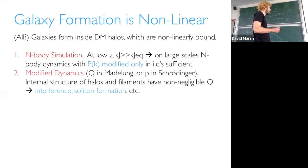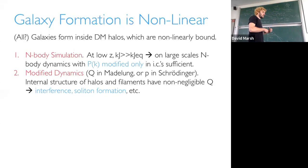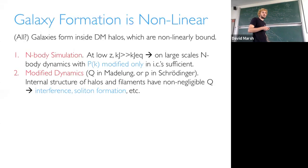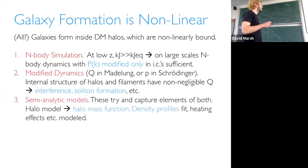You can modify the dynamics if you want more of the fuzzy dark matter physics — including either the quantum pressure in the Madelung formulation or the full wavefunction psi in the Schrödinger equation. This modified dynamics changes the internal structure of halos and filaments, giving you interference patterns, soliton formation, dynamical friction, and heating — all the things we've talked about in Jens's lectures. But this is really the full picture and it's hard to do on all scales. The alternative is to use semi-analytic models, which try to capture elements of both but can be run many times, less expensive than a full-scale simulation.